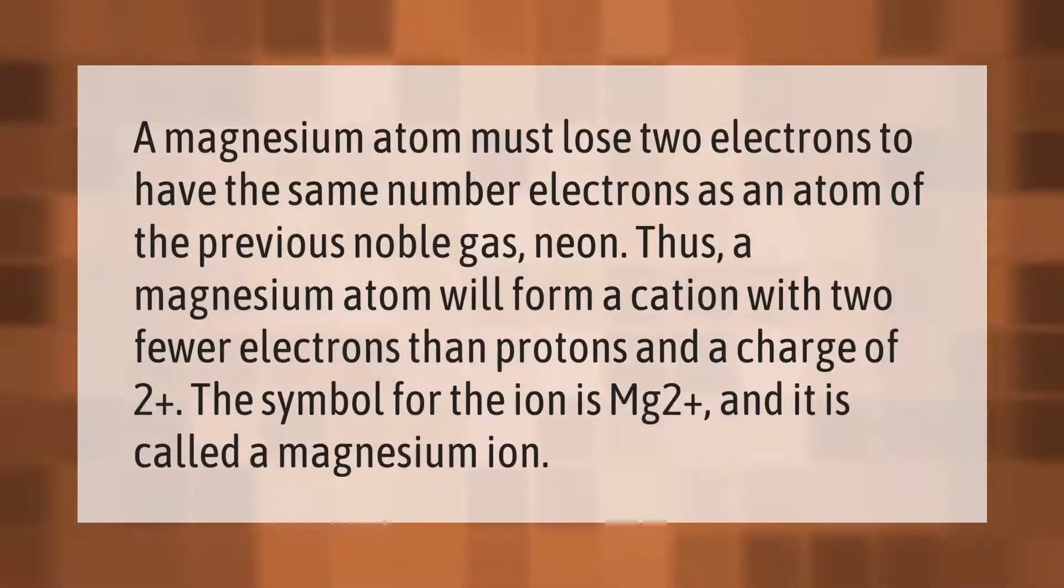A magnesium atom must lose two electrons to have the same number of electrons as an atom of the previous noble gas, neon. Thus, a magnesium atom will form a cation with two fewer electrons than protons and a charge of 2+. The symbol for the ion is Mg2+, and it is called a magnesium ion.